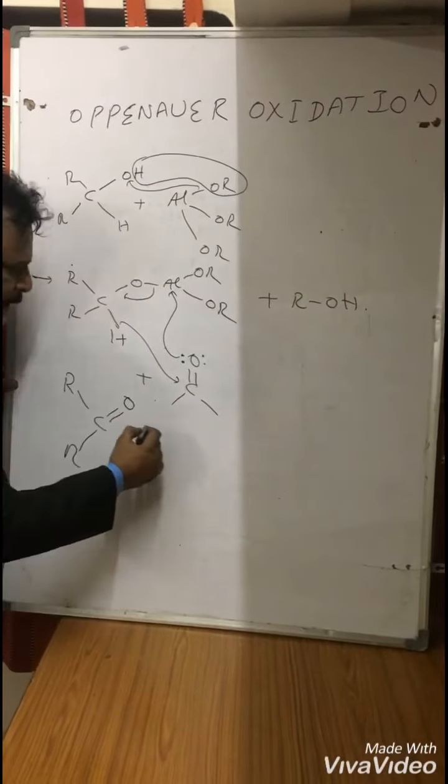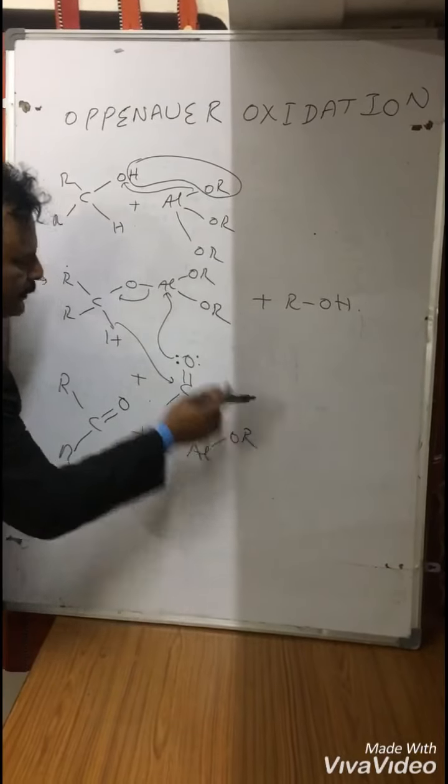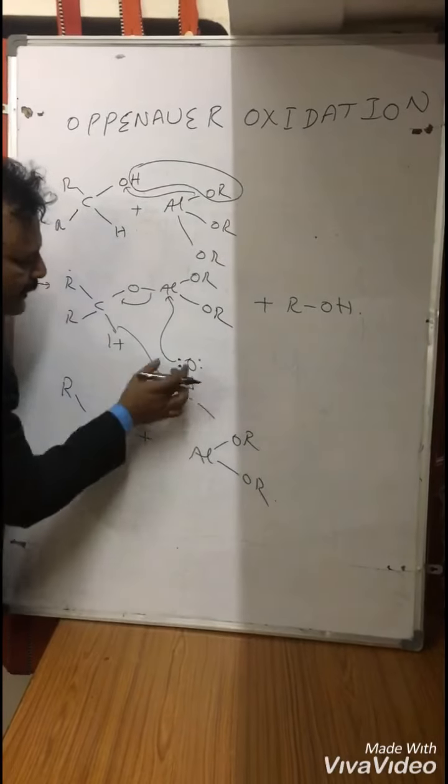And now Al OR, this OR, and again this OR. I'm going to write, and this oxygen here, and one carbon and one carbon.